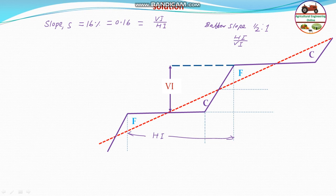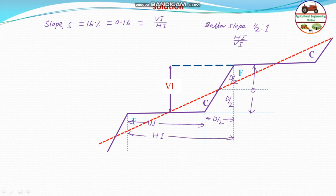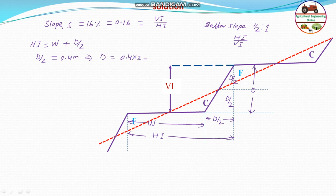Let us define the depth. The cutting depth is d/2 and the filling depth is d/2, so the total depth is d. Since the batter slope is half to one, the batter fill width should be equal to d/2. The width of the bench is w, and the batter portion is d/2. The depth of cut is given as 0.4 meter, so d/2 = 0.4, therefore d = 0.8 meter. The vertical interval VI is equal to d, so VI = 0.8 meter.